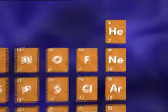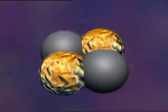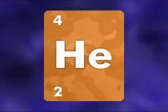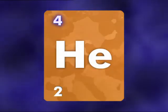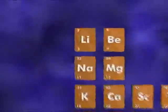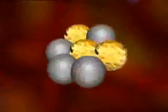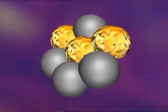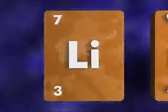What about helium? It has two protons and two neutrons. Two plus two is four, so the mass number of this helium atom is four. Next, look inside a lithium nucleus. Can you work out its mass number? Three protons and four neutrons mean the mass number is seven.